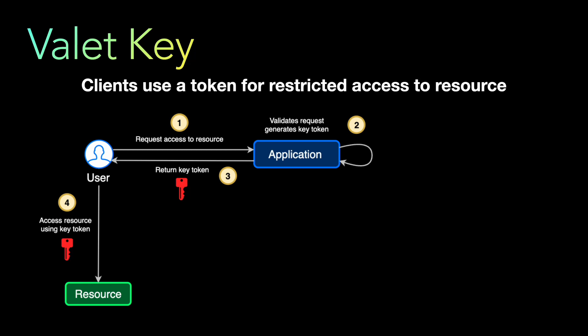Here is how the model works: the user first tries to access the resource, which goes to your application. The application validates the request, generates a key token, and returns it to the user. Using that key, the user accesses the resource directly. The key token carries the authentication mechanism — whether the resource is accessible or not. If the key token is not valid, the resource cannot be accessed. If the request comes from an untrusted source, the application won't generate the key token in the first place, so your resource is never directly exposed.